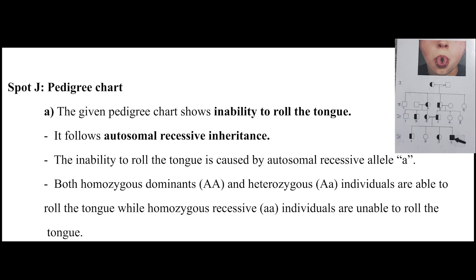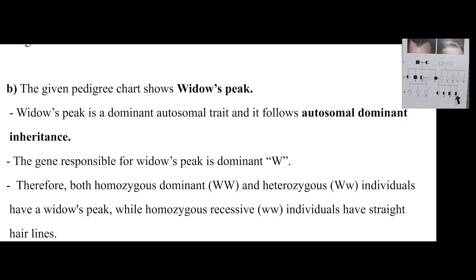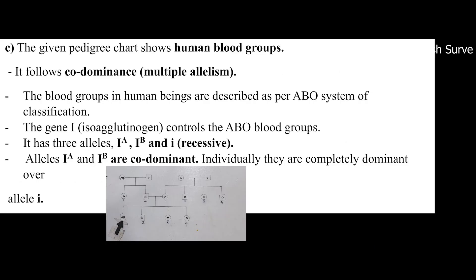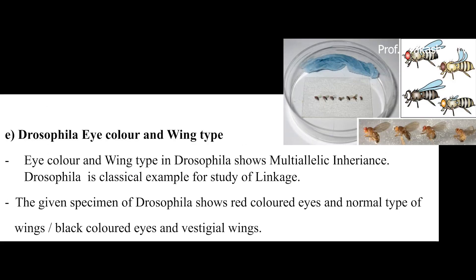Next is spot J, which is for pedigree charts. A chart will be kept and you have to identify and then describe. Here you may have rolling of tongue, or maybe widow's peak. Next may be color blindness, or maybe human blood groups. So charts you have to identify and describe. Next may be Drosophila eye color and wing type.